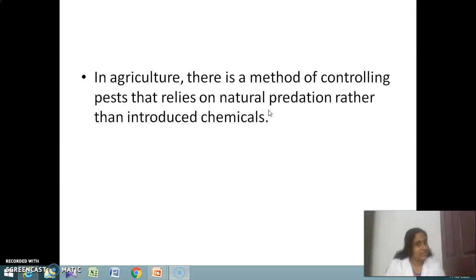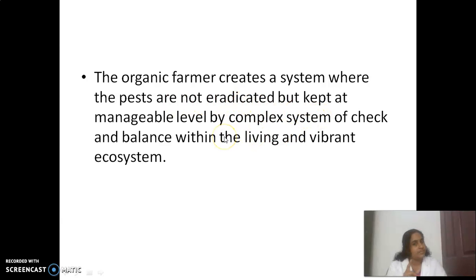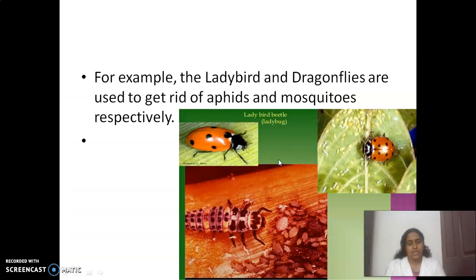Introducing chemicals causes different types of pollution — it kills soil, water, air, and even human beings, causing damage to all living organisms. So the organic farmer creates a system where pests are not eradicated but kept at manageable levels by a complex system of checks and balances within the living and vibrant ecosystem.